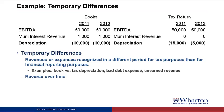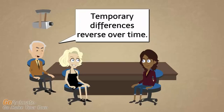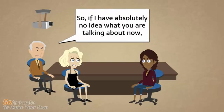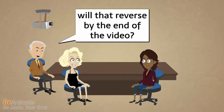These differences are going to reverse over time, and we're going to store them in something called deferred tax assets and deferred tax liabilities. A student jokes: 'Temporary differences reverse over time — so if I have absolutely no idea what you're talking about now, will that reverse by the end of the video?' Yes, that's exactly how a temporary difference would work — by the end of the video you'll know more. Although if it's a permanent difference, then we have a problem.